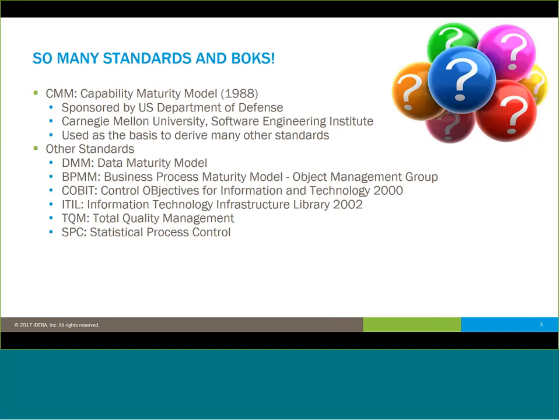When we look at this, there are a number of different standards that can be based on it: the data maturity model, the business process maturity model — which is set by the Object Management Group — COBIT (Control Objects for Information and Technology), ITIL (really detailing standardized processes based on technology and infrastructure, from 2002), total quality management, and statistical process control. What all of these have in common is really trying to develop standardized, formalized metrics, measurement standards, and basically providing a framework so that you can improve your processes in your organization as a whole.